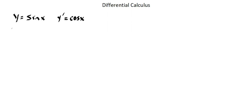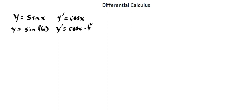Now let's look at a slightly more involved example. If our function is sine of a function of x — in other words, some function more involved than simply the variable x — then our derivative is the cosine of f(x) times the derivative of f(x).